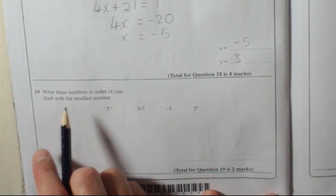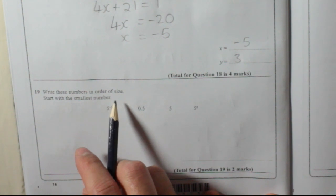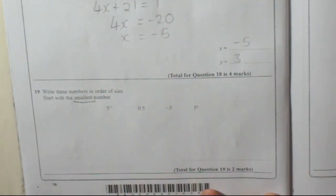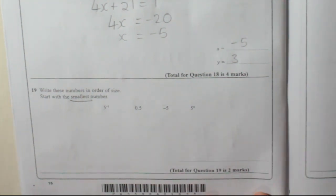Question 19. Write these numbers in order of size. Start with the smallest number. Smallest, that's important. People always read it wrong and put the largest number first.